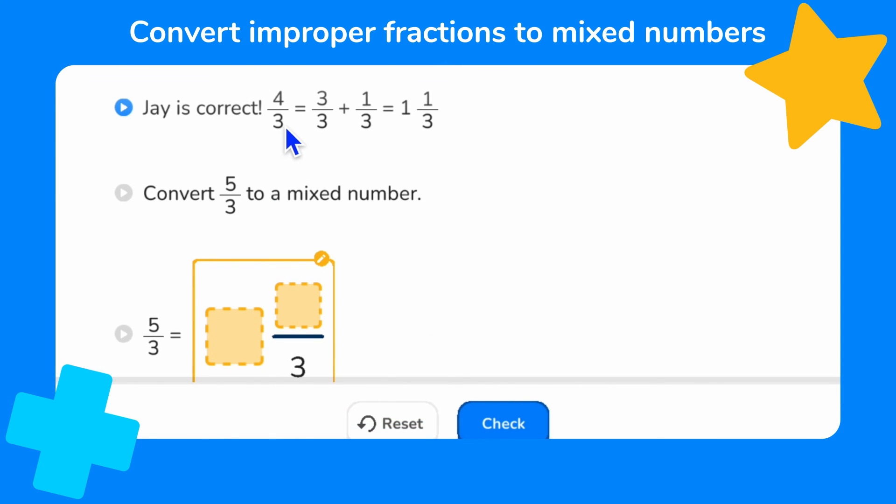So just to remind us to convert 4 thirds to a mixed number. We can say that 4 thirds is equivalent to 3 thirds plus 1 third. And we know 3 thirds is the same as 1 whole. So 4 thirds as a mixed number is 1 and 1 third.